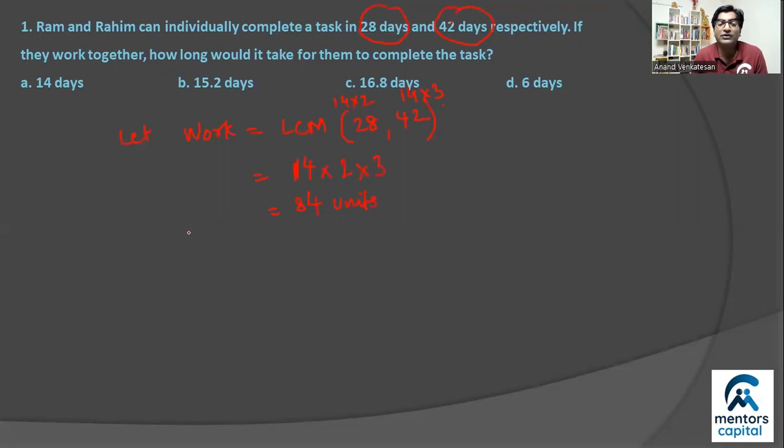Now work is equal to rate into time is the formula. So work is equal to rate into time. We have work assumed, and the problem said that Ram takes this much time and Rahim takes this much time. So the rate of Ram will be work upon time, so 84 divided by time taken by Ram, 28.